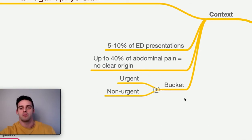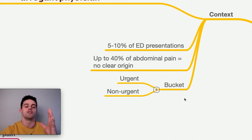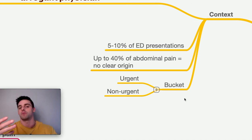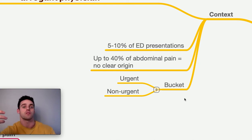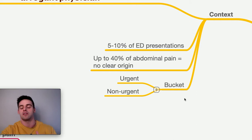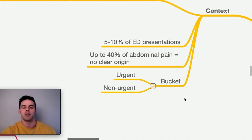Always keep two buckets in mind: urgent and non-urgent. Urgent patients need referring or intervention earlier, perhaps from surgeons or vascular colleagues. These will be people who look unwell, are very hypotensive or tachycardic, very pyrexial, or seem to be in a huge amount of pain.